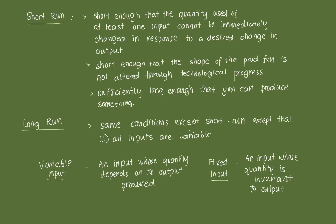A key part of the theory of the firm is that the production process has different spans under which it can operate. A firm finds itself in an economic environment where it may need to adjust certain inputs depending on the production horizon. In the theory of the firm, we typically look at two different horizons. The first is the short run, where the period is short enough that the quantity of at least one input cannot be immediately changed in response to a desired change in output.